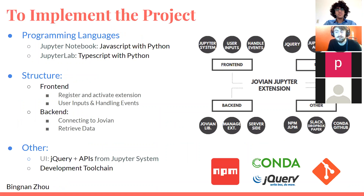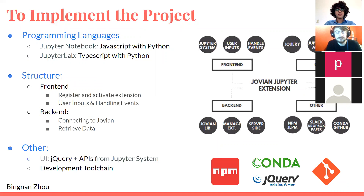To implement the project, there are three languages we used. We used JavaScript and Python to develop the extension in Jupyter Notebook, but for JupyterLab, it only allows developers to write code in TypeScript, so we used TypeScript and Python for development in JupyterLab. The project structure is separated into two parts: the front end and the back end. The front end handles the registration and activation of our extension in the Jupyter system, as well as normalizing user inputs and events. The back end handles communications between end users and Jovian servers, since most functionality involves a server. We also used one JavaScript library, jQuery, to form the UI for interacting with users.